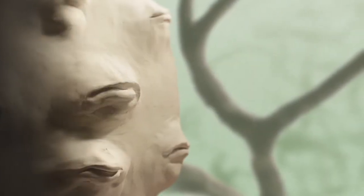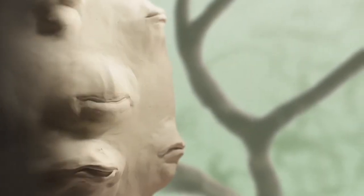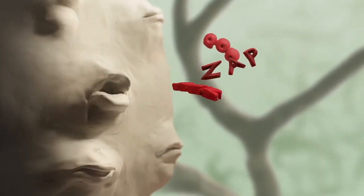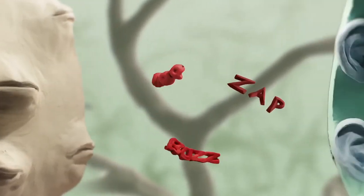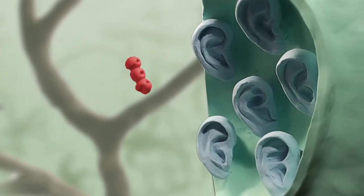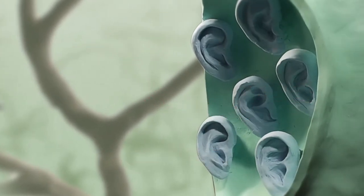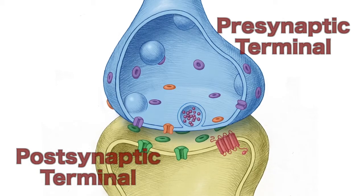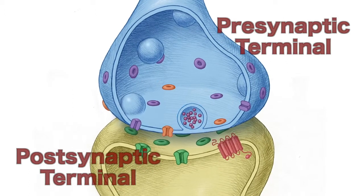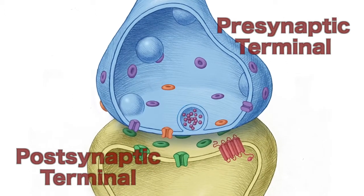How does the cell take an electrical signal — the action potential — and translate it into a chemical signal? There's quite a bit of molecular complexity required to enable the speed and precision of vesicle release of neurotransmitters into the synapse. Over the next few segments, we'll go through the presynaptic machinery of chemical release.